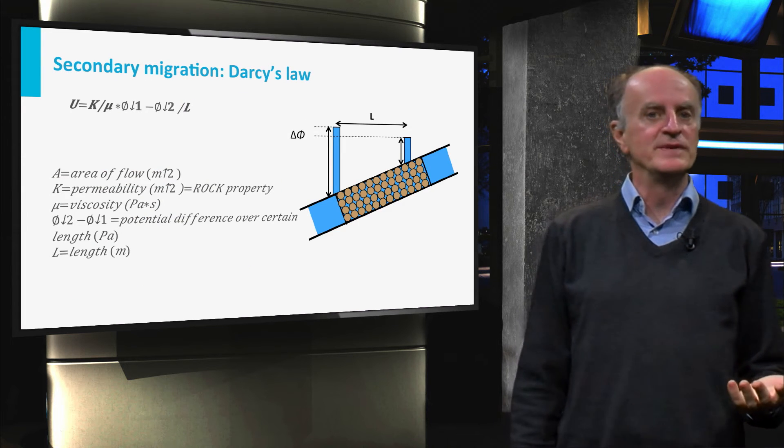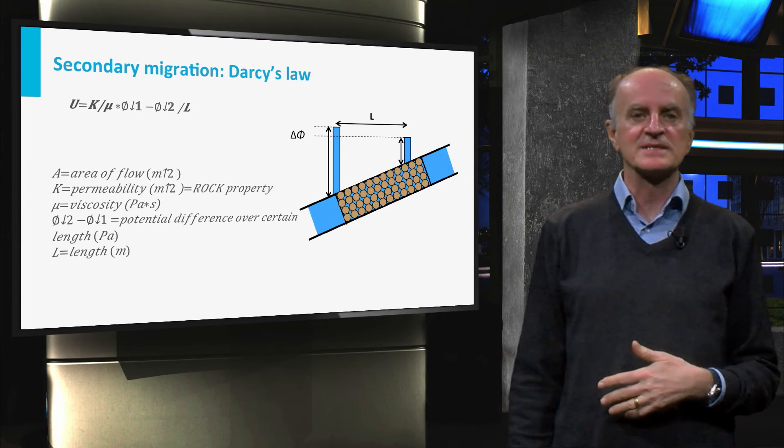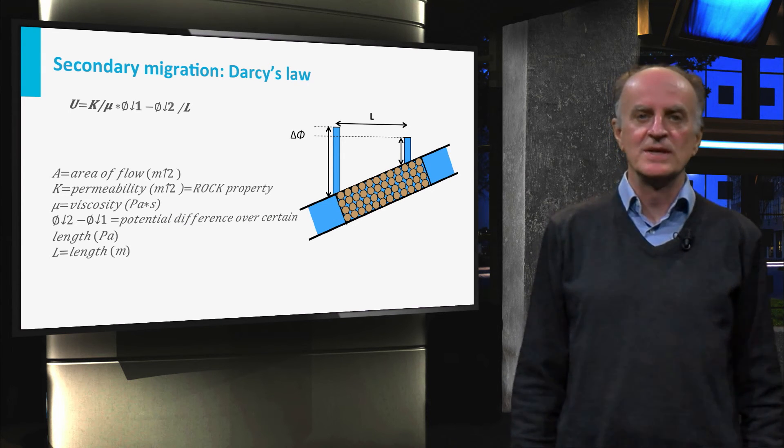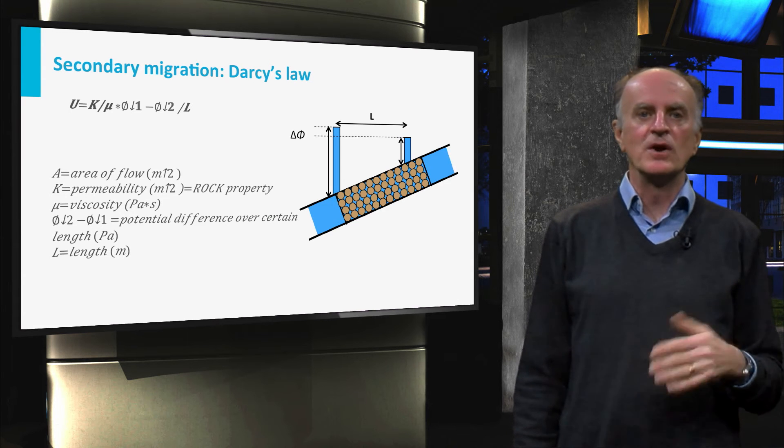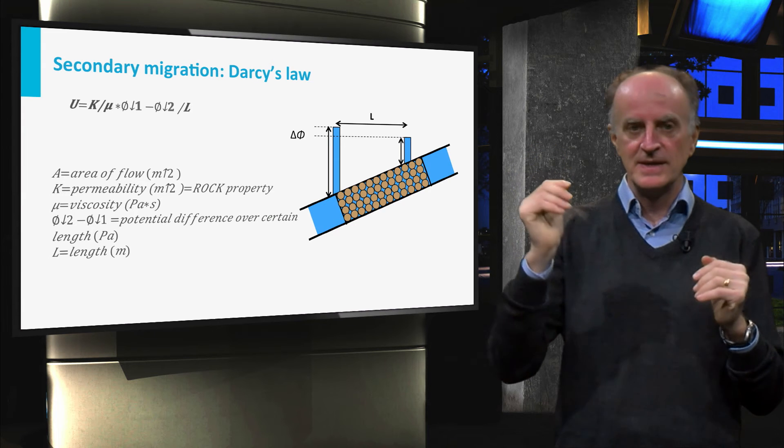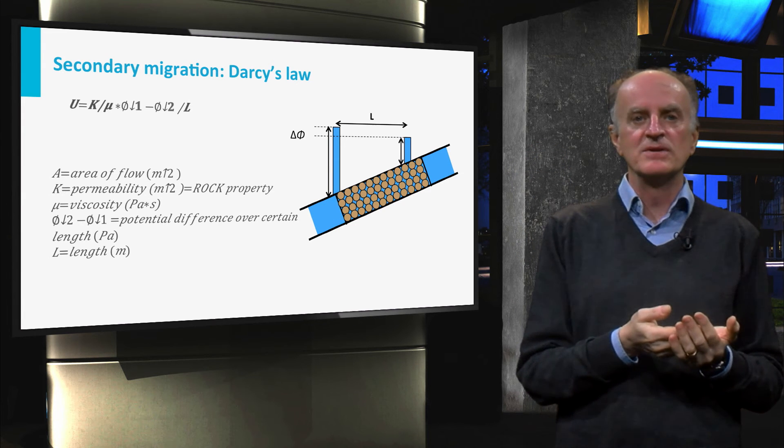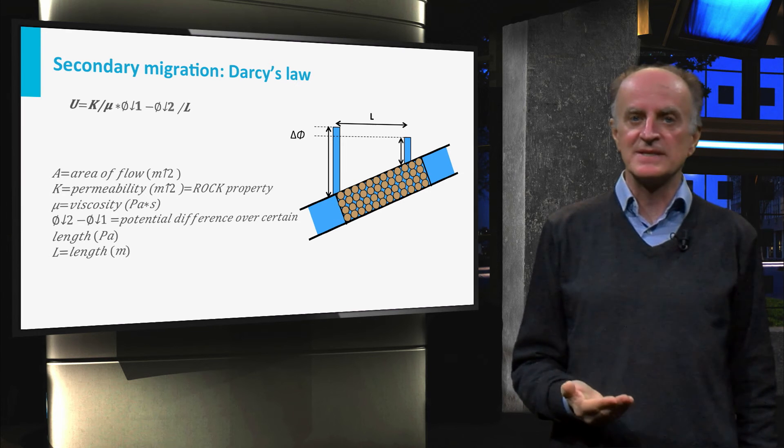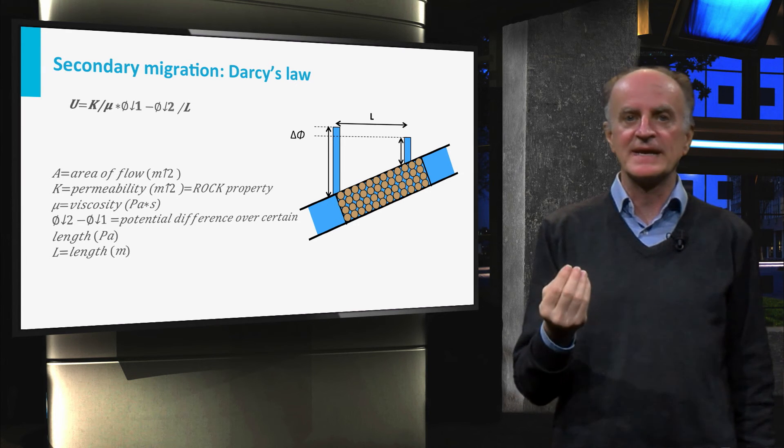How fast are hydrocarbons moving along the permeable layer towards the reservoir? For this purpose, we use Darcy's law, which describes the flow of a fluid through a porous medium driven by pressure differences. As you can see from the equation, flow is inversely proportional to viscosity, which means for instance that oil will flow more slowly than gas.